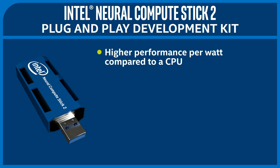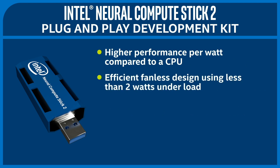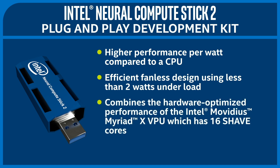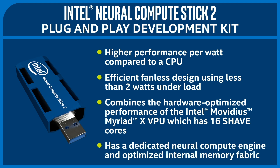It has a higher performance per watt than a CPU, with an efficient fanless design using less than 2 watts under load. It combines the hardware-optimized performance of the newest Intel Movidius Myriad X VPU, which contains 16 SHAVE cores — streaming hybrid architecture vector engine cores — specifically designed for optimal vision processing. It also has a dedicated neural compute engine and optimized internal memory fabric.